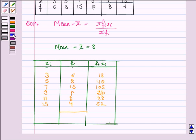Now first, we have to find summation fi, that is, the sum of all these frequencies. 6 plus 8 is 14, 14 plus 15 is 29, 29 plus 8 is 37, 37 plus 4 is 41, plus p.